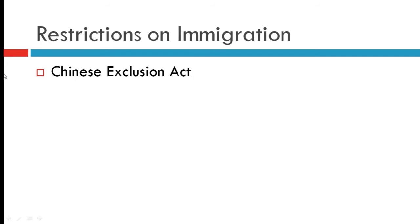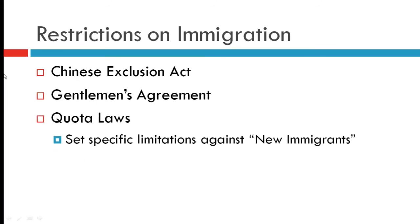Keeping in line with fear of change, there was strong resistance to immigration in the 19th century. We already talked about the Chinese Exclusion Act, which banned Chinese laborers, and the Gentleman's Agreement, in which Japan agreed to stop sending immigrants and San Francisco schools were desegregated. We also discussed nativism resulting from the influx of new immigrants from eastern and southern Europe. Throughout the 1920s, quota laws were passed setting specific limitations on how many immigrants could come from each country.